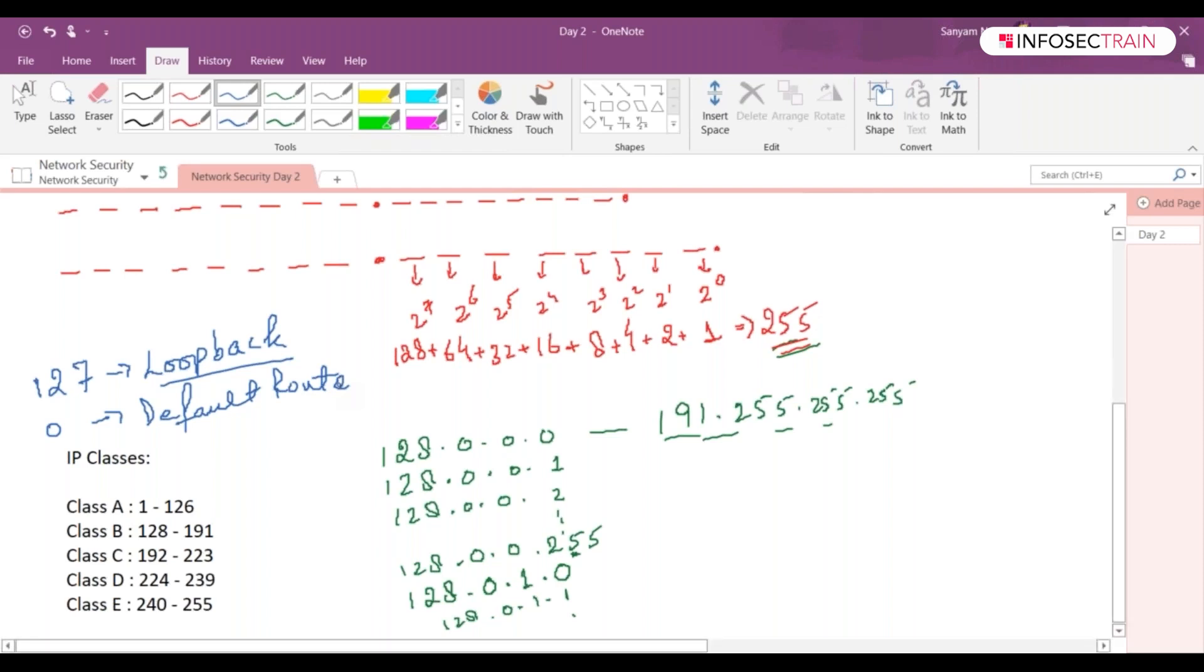127 is referred to your loopback IP. It is to check whether your TCP is properly implemented in your NIC or not, NIC as in your network interface card. So this is the entire scenario for that. So if you write 1 to 126, that is also fine, 0 to 127, that is also pretty much fine.